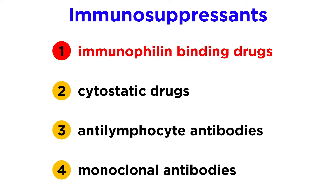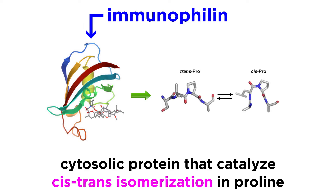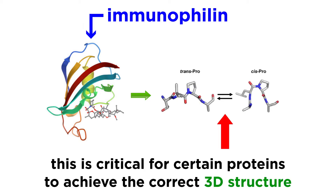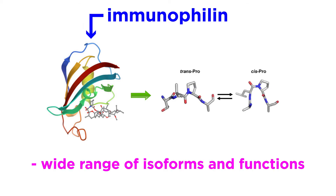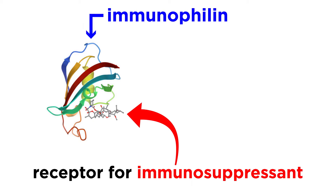First, we will cover immunophyllin-binding drugs. Immunophyllins are cytosolic proteins that catalyze the biochemical reaction of cis-trans isomerization for the amino acid proline. This isomerization is critical for the correct folding of many proteins in achieving the right three-dimensional structure. These proteins have a wide range of isoforms and functions, and are highly conserved in terms of evolution, existing in eukaryotic and prokaryotic cells alike.